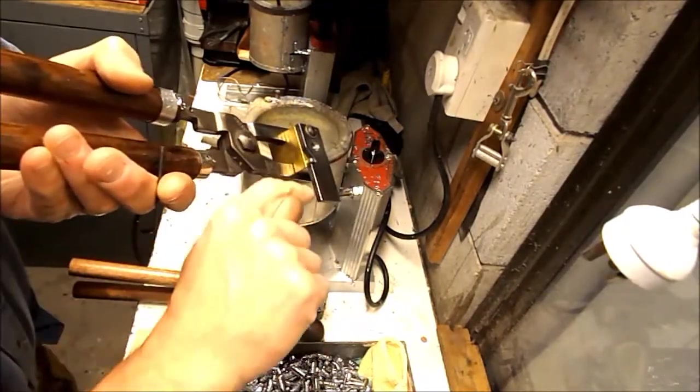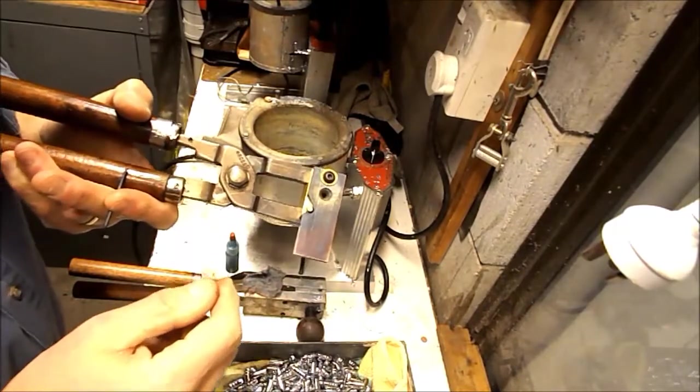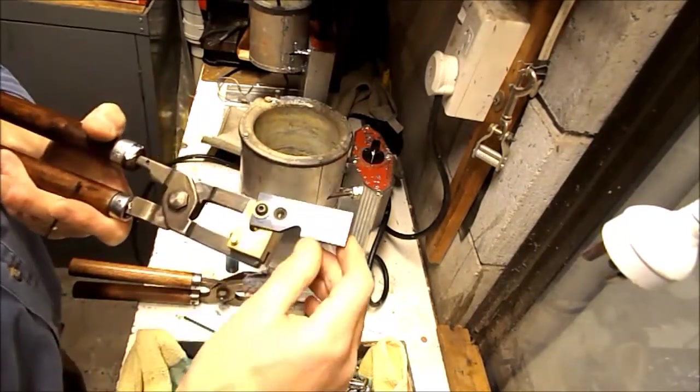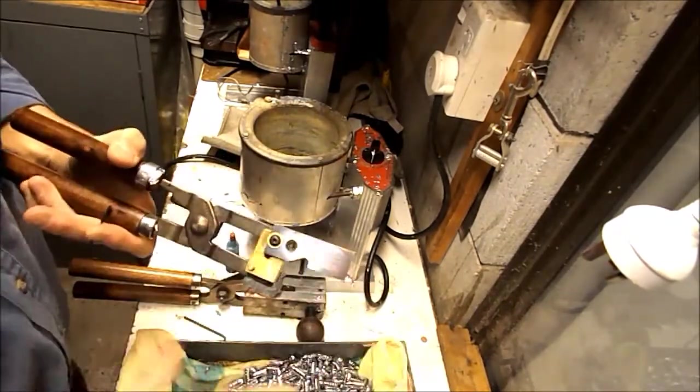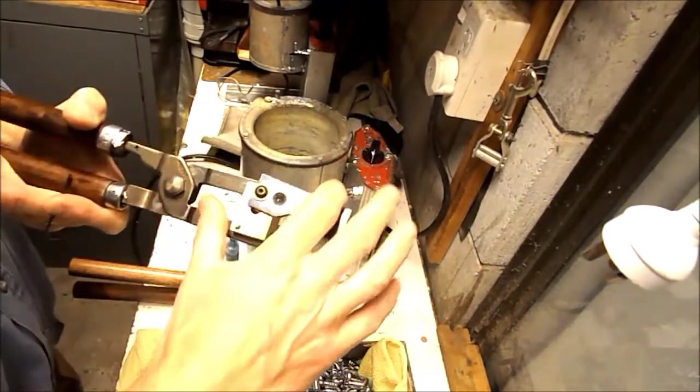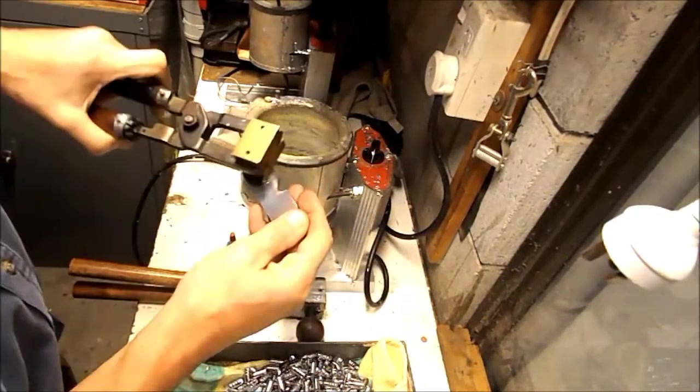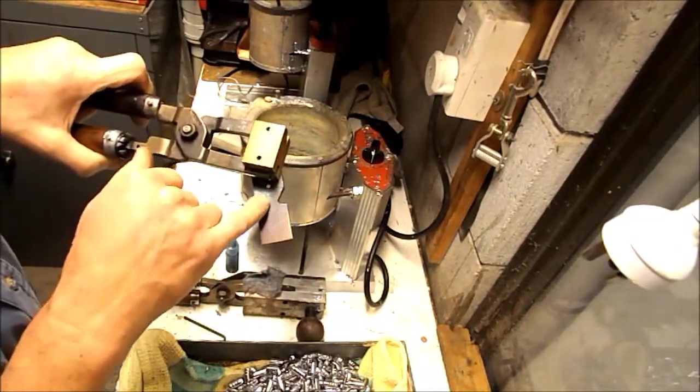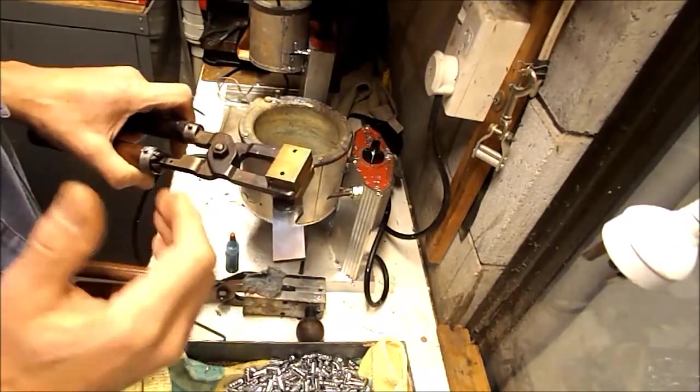If we hold it up to the light and look through this way there should be no light showing. Sometimes the sprue plate may need to be removed and polished on a flat surface with abrasive cloth because there may be high spots or low spots, so that's something worth looking at as well.